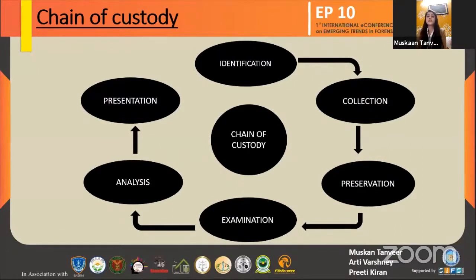Chain of custody involves all the steps and procedures followed from recovery of an evidence till its presentation in the court of law. It has certain phases — the first is identification. Identification is to identify the type of crime which was done using mobile phones.